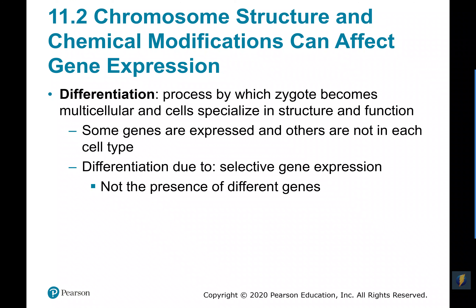Differentiation happens because some genes get expressed in some cells and some genes don't get expressed in others. By selectively activating and transcribing different genes — selective gene expression — we get great diversity in cellular structure and function in multicellular organisms, even though all cells have the same DNA. It doesn't matter whether it's a nerve cell, muscle cell, leaf cell, or stem cell — they all have the same DNA but show a huge array of diversity due to selectively expressing different genes.